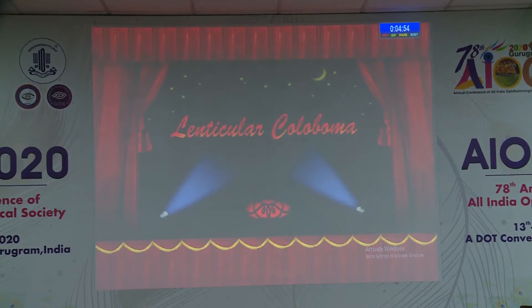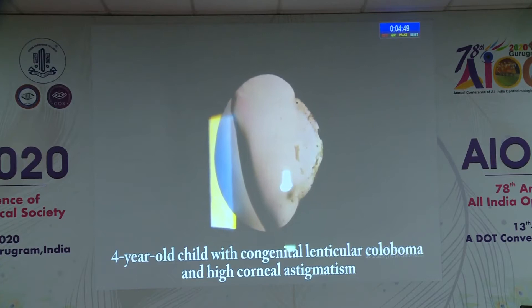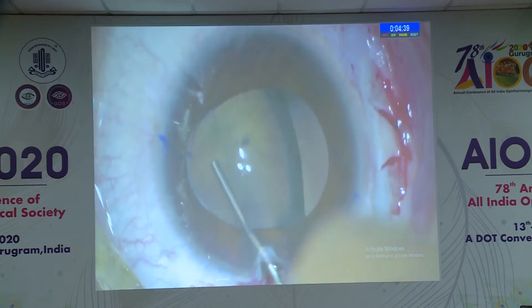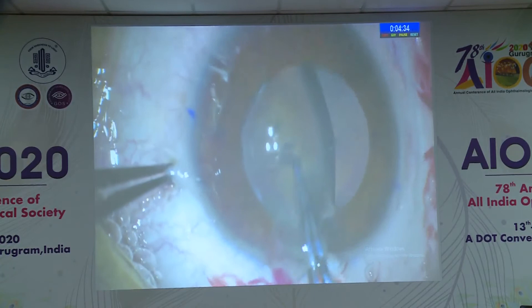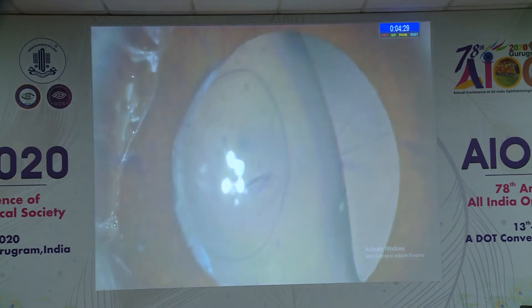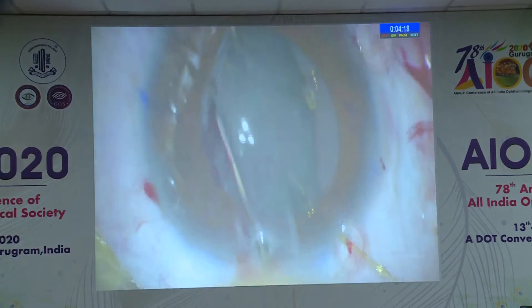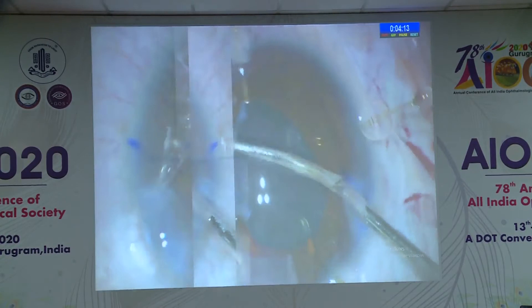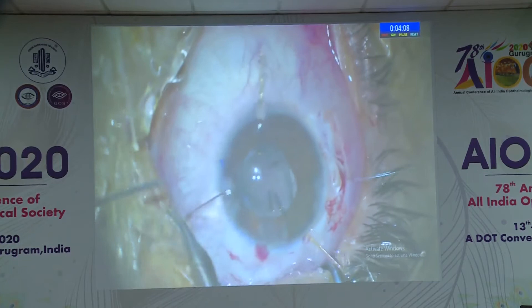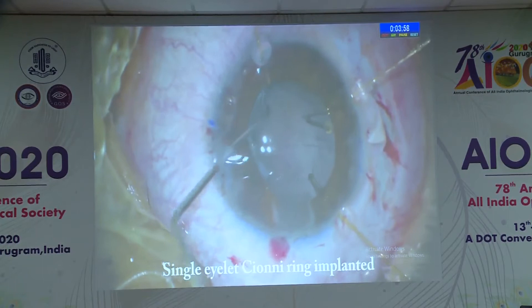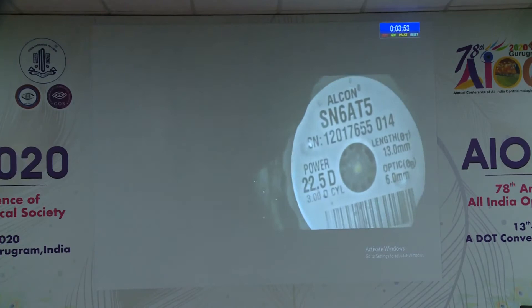This is a child with lenticular coloboma. We made a scleral flap, synekiotomy was done, viscoelastic applied, and continuous curvilinear capsular axis performed. Capsular hooks were applied to the rhexis margin - these are blunt capsular axis hooks compared to the sharp iris hooks, but many times we have used iris hooks for rhexis as well. A single eyelet synekiotomy ring was implanted for stabilization of the capsular bag.